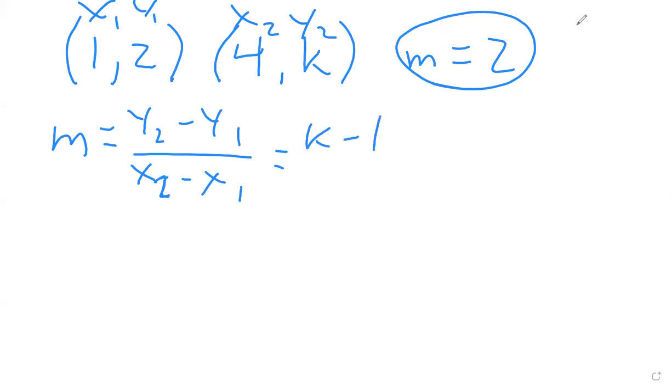oops, sorry, that's a mistake—k minus 2 (the second y minus the first y) over 4 minus 1 (the second x minus the first x), which gives us (k-2)/3. That's as far as we can take it.